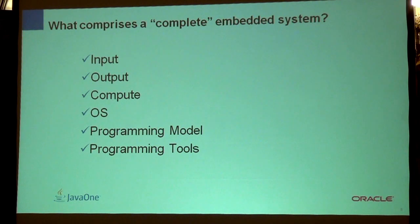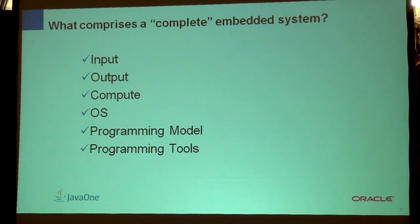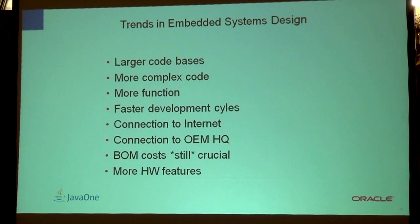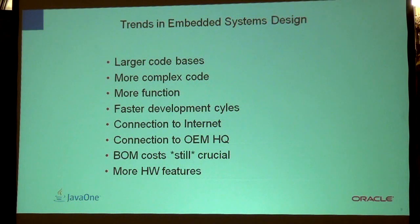So what do we need for an embedded device? You need input and output — you need to communicate with the device and get something back. You need a compute device, a CPU. It has to have a basic OS. And beyond that, you need a programming model and programming tools. With embedded devices, the amount of memory gets bigger exponentially every year, so we can put in more complex code.